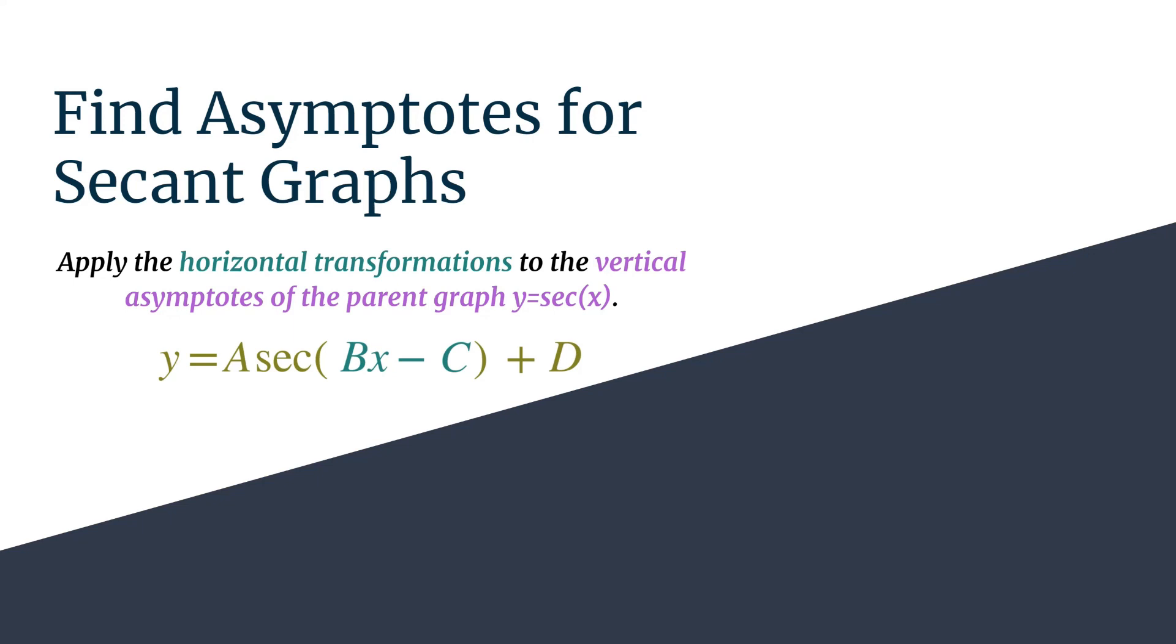So here's a general form secant equation and let's make sure we know the pieces. The horizontal transformations are whatever the inputs of the secant function are. So it's whatever terms are there inside the parentheses of the secant function.